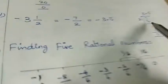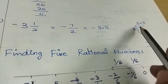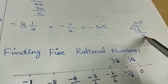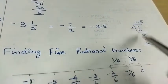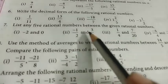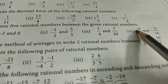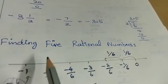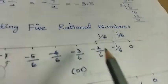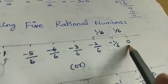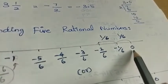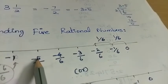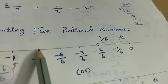Divide: 2 goes into 7. 2 threes are 6, one balance. Zero — moving decimal point — 2 by 7. Minus 3 point 5. The answer is minus 3.5. Now, find 5 rational numbers between the two given rational numbers. We will put numbers between them.